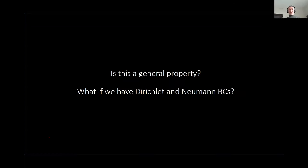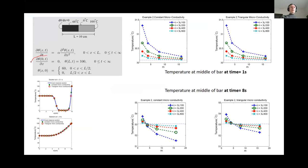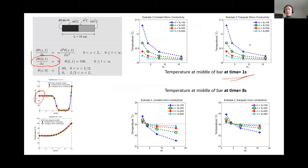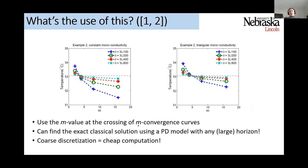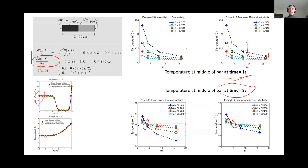We wondered how general this property is. Does it happen only because we had Dirichlet boundary conditions on both ends? We then tried Neumann boundary conditions — no flux at one end — with a different initial condition of 60 degrees with a discontinuity. At early times you don't have them cross, but they asymptotically still have delta convergence. After a while, you do see the same property: the crossing of the m-convergence curves at the exact local solution.